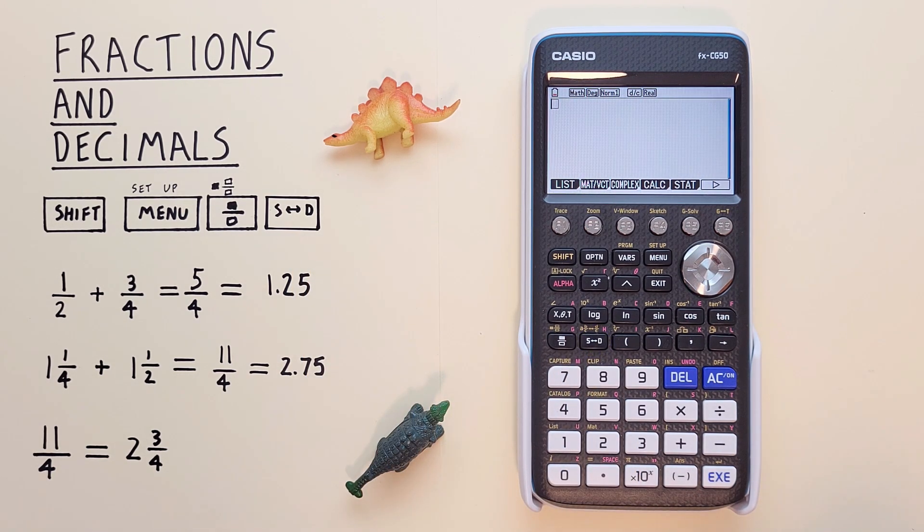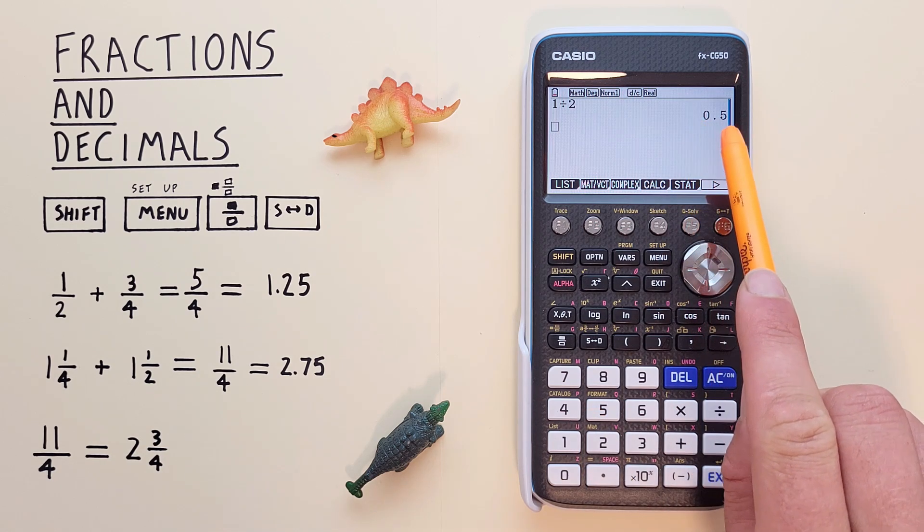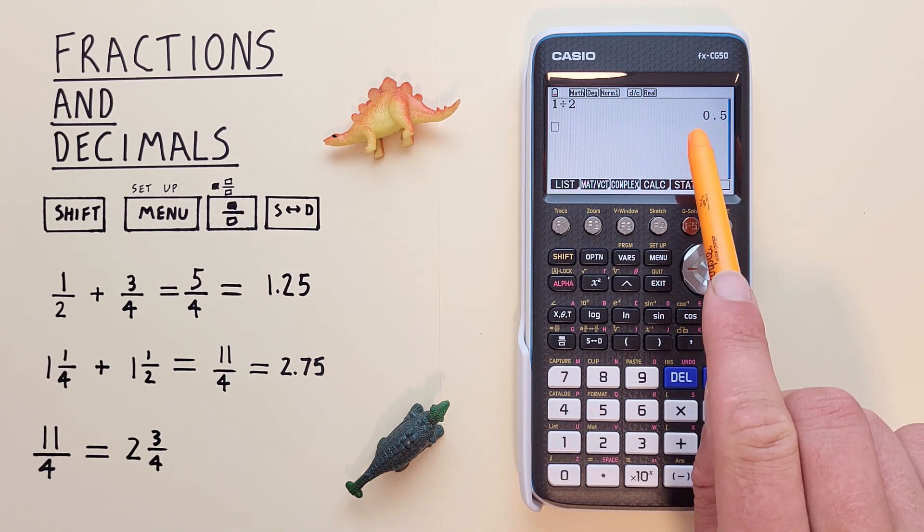On this calculator, when we enter something like 1 divided by 2 and hit exe, we see we get a result in decimals. So we would get 0.5.